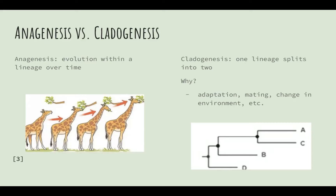On the other hand, cladogenesis is when one lineage splits into two. This happens due to a variety of reasons such as selective mating, adaptation, environmental disasters, etc. Cladogenesis can be illustrated through a rooted tree. A rooted tree is when the order of divergence in the tree is known and based on the similarities between OTUs and their outgroup.